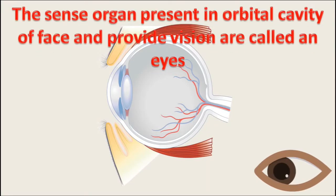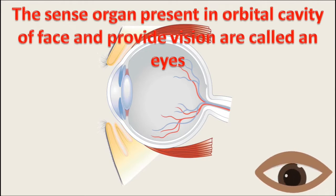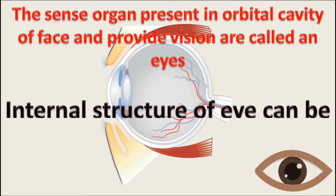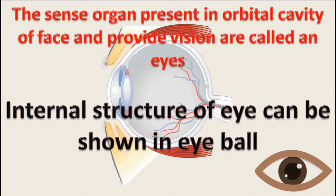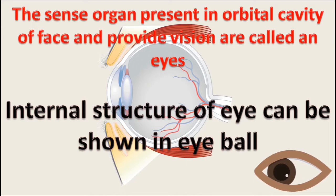The sense organs present in the orbital cavity of the face that provide vision are called eyes. The internal structure of the eye can be shown in the eyeball.